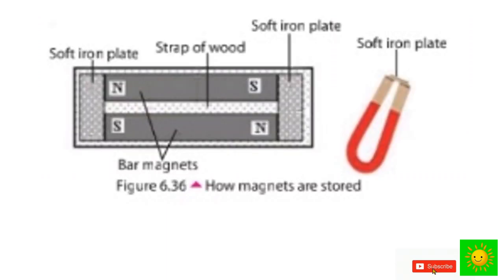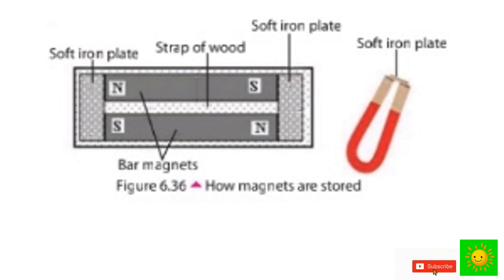Regarding the storage of permanent magnets, the magnetic power of a permanent magnet can be protected for a long time if it is stored in such a way that its magnetic field does not scatter. You can see how magnets are stored using soft iron plates and a strap of wood. Both bar magnets and horseshoe magnets are stored the same way.